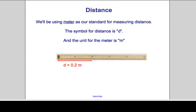If you look at this meter stick, and again, we're going to use the meter as our standard for measurement, the distance between the edge of the meter stick, the left edge, and let's say the 20 centimeter mark is the distance. And distance, the symbol for distance that we use is d. The unit for distance is the meter, so the distance is equal to 0.2 meters in this case.